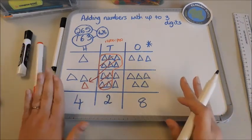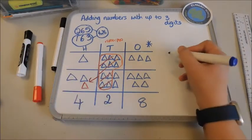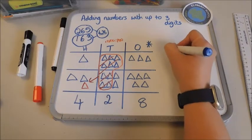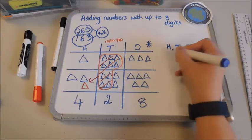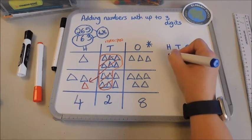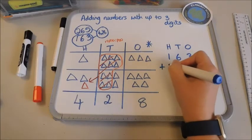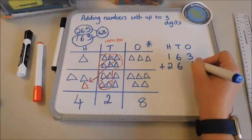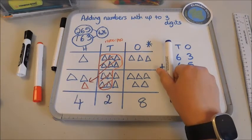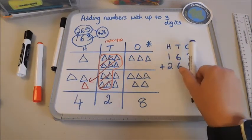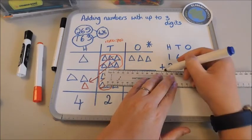Now when your children are ready we would then go on to a more formal written method and we can still use the place value headers. So I can still use my hundred tens and one header but this time we would write the number out. I would have 163 add that 265 and it's really important that those columns line up otherwise our calculation is going to be wrong.